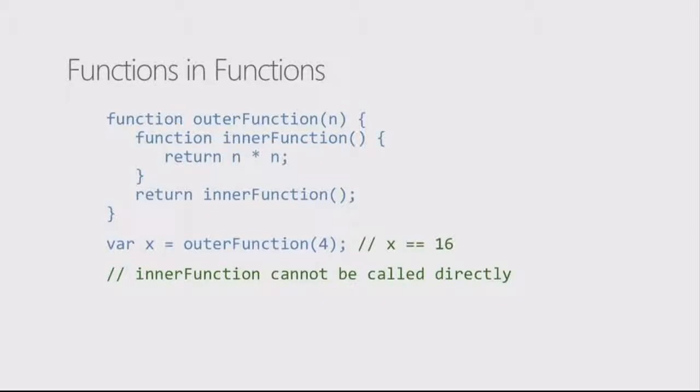Sounds complicated, but it will actually work. It will return the value of itself times. So, we return the inner function as the return value of that outer function. So, if you say variable x equals outer function 4, then ultimately the return value is going to be 16, because 4 times 4 will equal that. But I can't access that inner function directly.